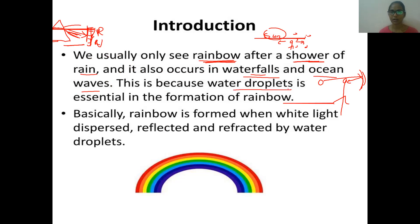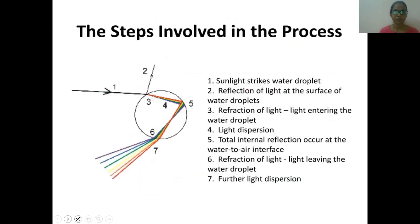Water droplets are essential for the formation of a rainbow. Rainbow is formed when white light is dispersed, reflected, and refracted by the water droplet. Three processes occur: it will reflect, refract, and diffract from the water droplet. Then only the rainbow will be formed. The steps involved in this process, if you understand clearly, you can answer this question clearly.